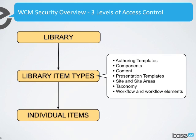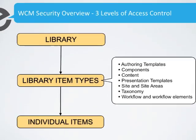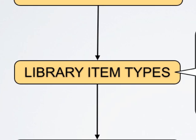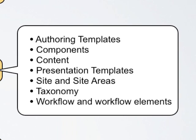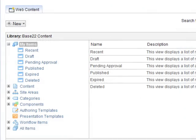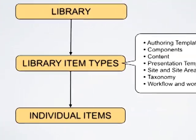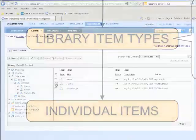In WCM, you have three basic levels of control where you can apply access controls to items. It starts at the library level, and then it moves down to the library item types — things like authoring templates, components, content, and presentation templates — those major categories that you see on the left in the WCM authoring UI. And of course, in WCM, you can also secure things individually at the item level.